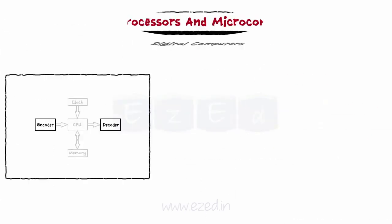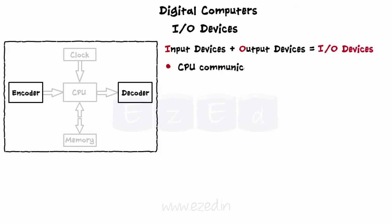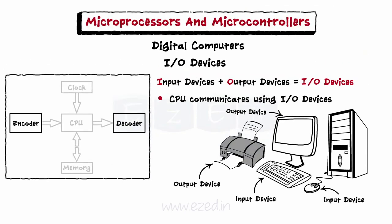The last block is input and output devices. Input and output devices together are called I/O devices. The CPU communicates with the outside world using these devices. Examples include input devices such as keyboard and mouse, and output devices such as printer and monitor.